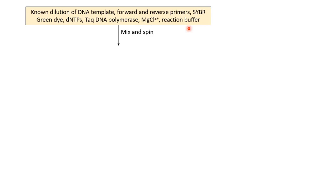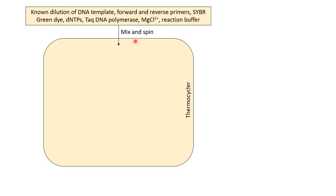After preparing the reaction mixture in a tube, it is mixed by vortexing and flash-spun for a few seconds to settle the content. The settled content in the tube is then placed in a real-time machine having a thermal cycler where temperature cycles at different ranges.